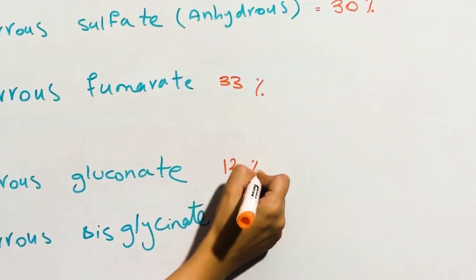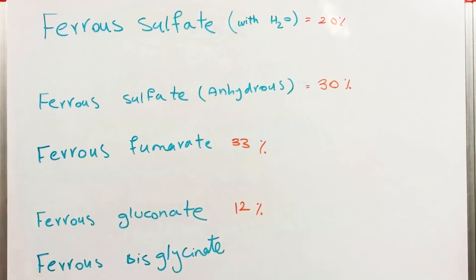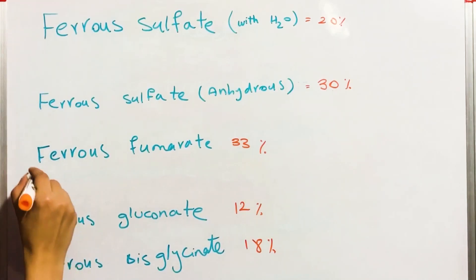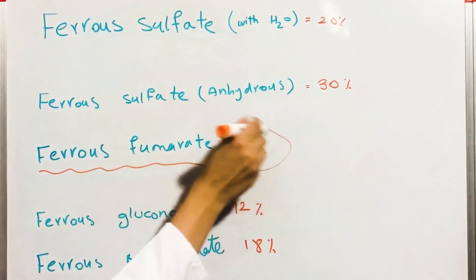Ferrous gluconate contains 12 percent elemental iron in it, and ferrous bisglycinate contains 18 percent elemental iron in it.